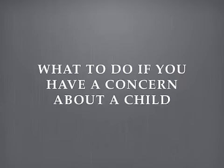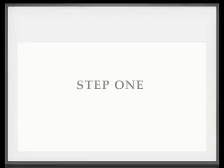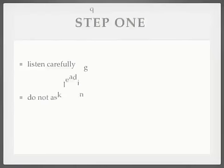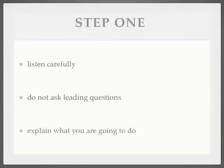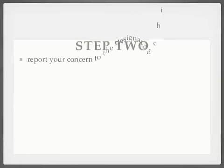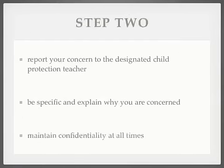We will now explore what to do if you have a concern about a child. Step 1: take what the child says seriously, listen carefully without interrupting or prompting, and reassure them that they are not to blame. If they are in a group setting, arrange to see them on their own. Let them know what you are going to do to help them, but explain that this may mean you will have to tell someone else. Step 2: report your concerns to the designated teacher or a senior member of staff as soon as possible. They will advise on the next course of action. Do not delay, especially if a child is in need of emergency medical attention or protection from abuse. This is particularly important in cases of sexual abuse.